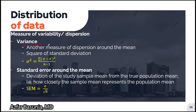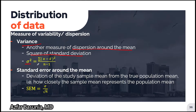The variance is another measure of dispersion around the mean, calculated by taking the square of the standard deviation. Unsurprisingly, variance is denoted by sigma squared, and the formula for variance is basically the formula for standard deviation without the square root.